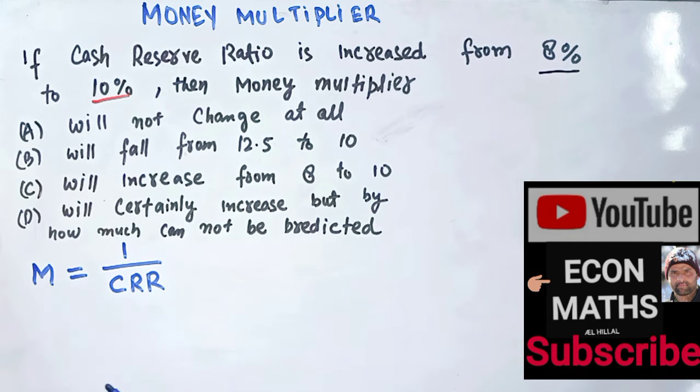If as this CRR gets bigger and bigger, money multiplier gets smaller. That means there will be less supply of money. So the bigger this is, the lesser will be the money multiplier.